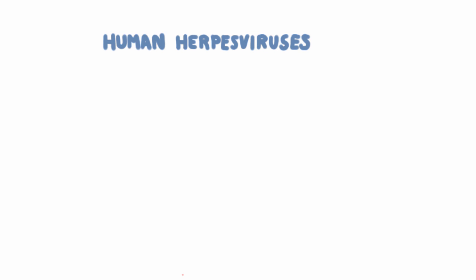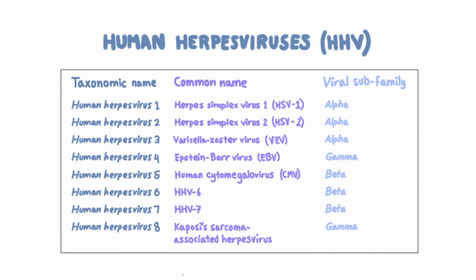In this unit, we're going to learn about herpes viruses. That's one word, herpes virus, and it refers to a family of viruses. There are a lot of different kinds, but not surprisingly, the ones we care about are the eight that infect humans. We call those the human herpes viruses one through eight, or HHV one through eight.